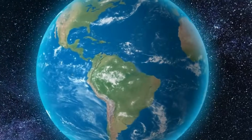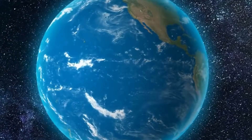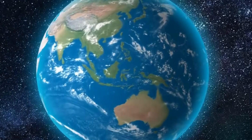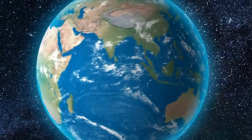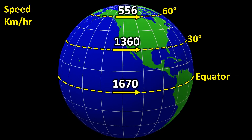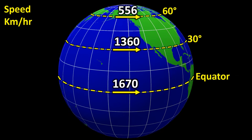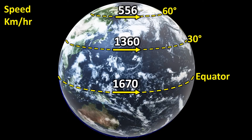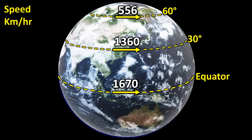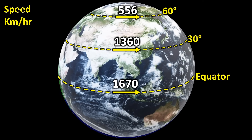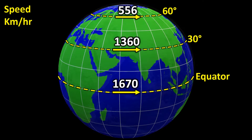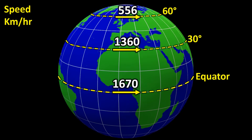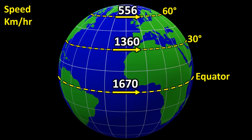Earth is surrounded by an atmosphere. As the Earth rotates, the atmosphere rotates along with it. At any given location, the speed of the surface and the speed of the air just above it is nearly the same. This means that the atmosphere above the equator moves faster, and as we move closer to the poles, its speed decreases gradually.